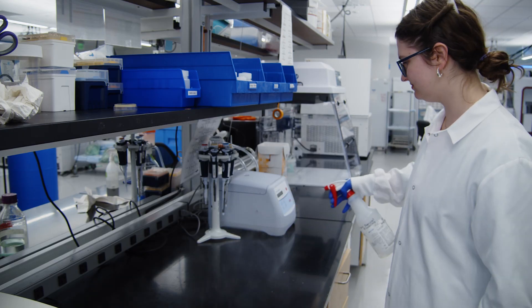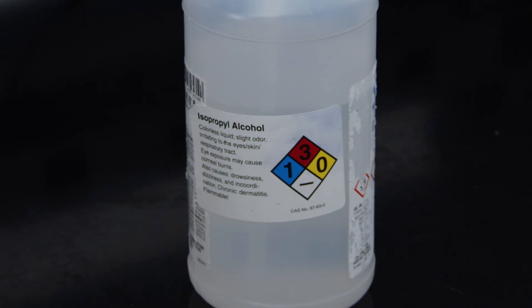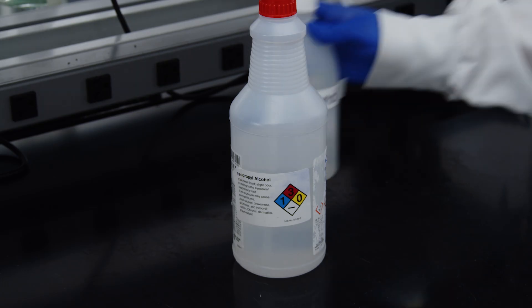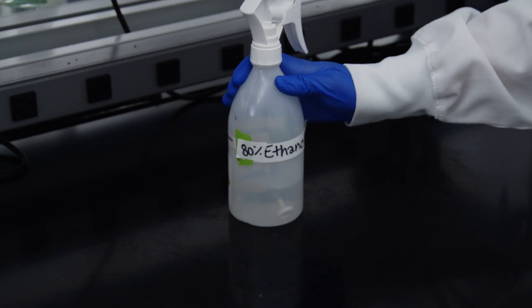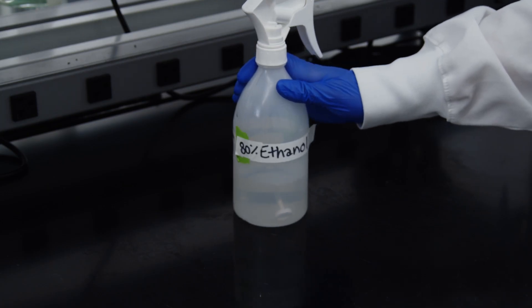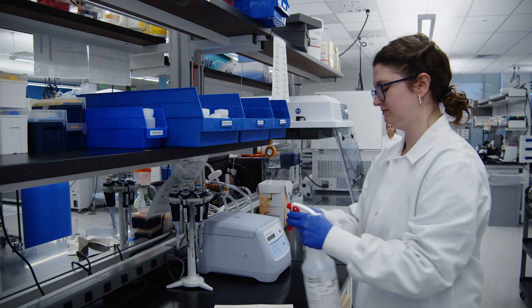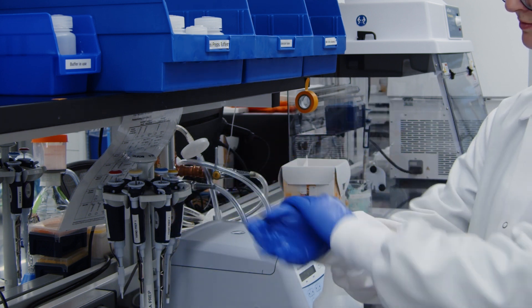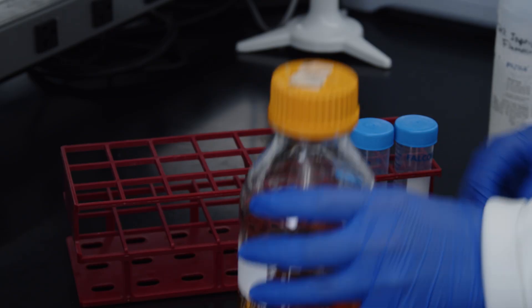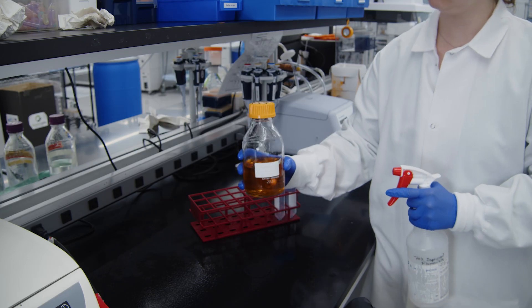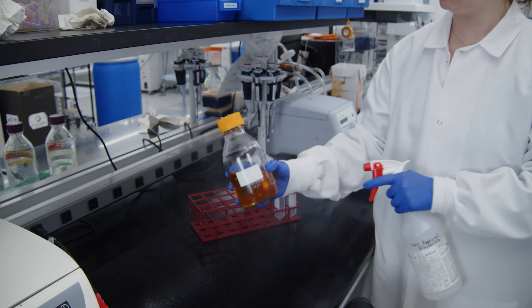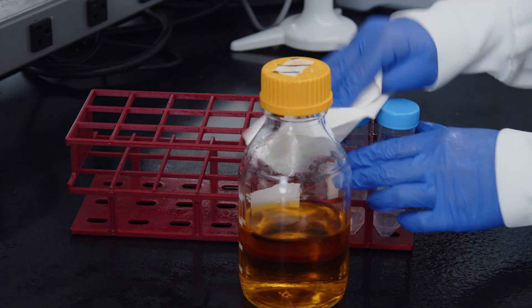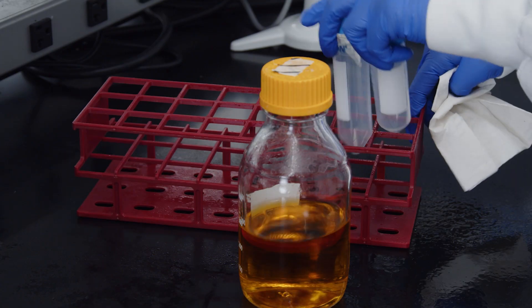Next, spray your bench down with a disinfectant. At Adgene, we use isopropanol. But many labs use ethanol slightly diluted with distilled water. It's not just your bench that needs disinfecting. Your gloves, sleeves, and any bottles or containers you're working with also need to be disinfected. Just remember to let things dry before using, so you don't accidentally add alcohol to your samples.